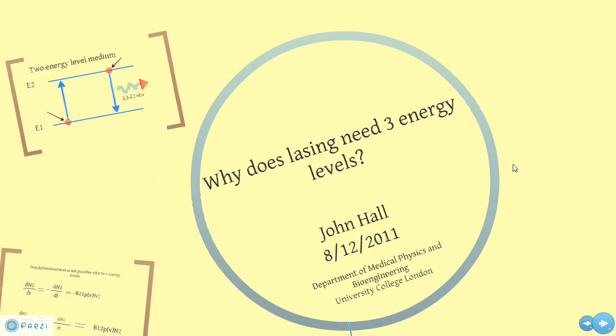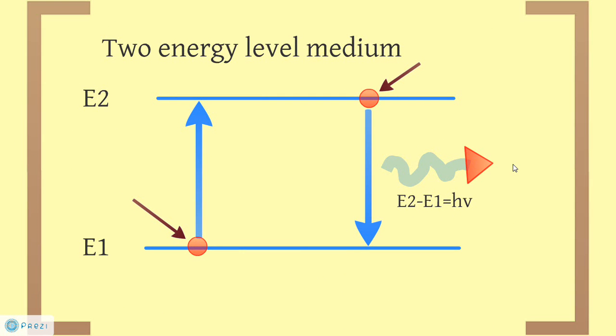We can answer the question by first examining a two energy level system. We have a ground state, E1, and an excited state, E2. Incident radiation will excite the ground state electrons to the higher energy level, E2, where the electron can either undergo spontaneous decay, giving rise to incoherent radiation, or, as is the case in lasing, be stimulated by incident radiation to drop to a lower energy level, E1, giving coherent radiation in the process.